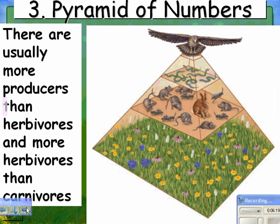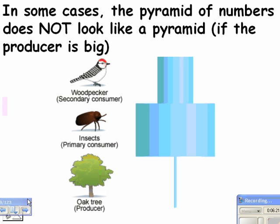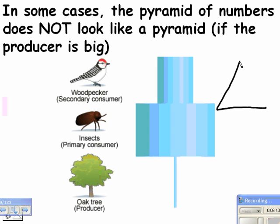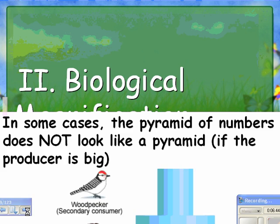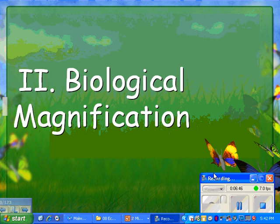The last type is the pyramid of numbers. This generally looks like the other two pyramids — more producers than herbivores, more herbivores than carnivores. But you don't always get that. In some cases it doesn't look like a pyramid. For example, one oak tree might support more bugs than the tree itself represents, and those bugs might support a couple of woodpeckers. So typically pyramids look like pyramids, but occasionally they don't. And that's it for this one.